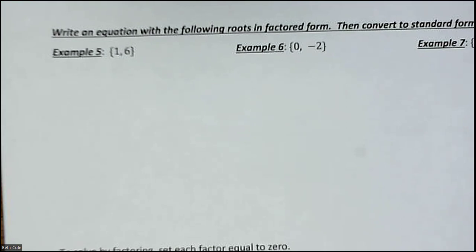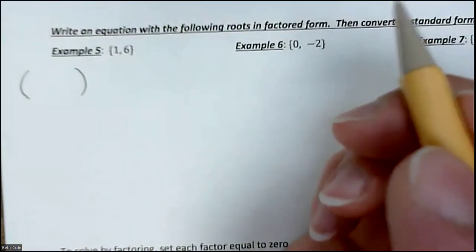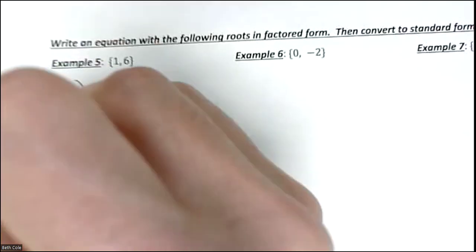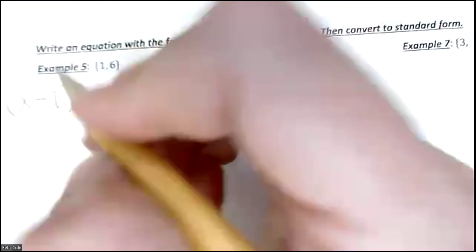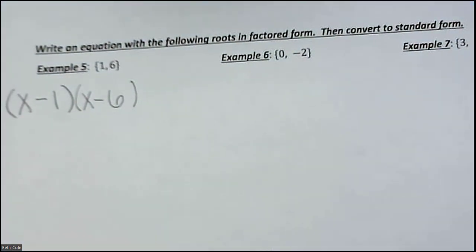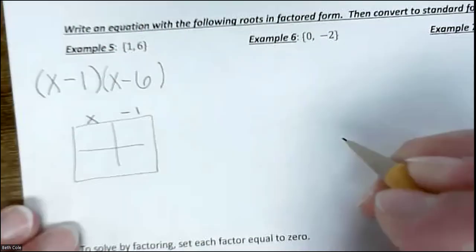For these problems, we're given the answers and we're going to write the equation — kind of the reverse of what we did. You've actually done this before; it's not new information. You just have to set it up yourself. If one of your answers is 1, what is the factor going to be? x minus 1, because 1 minus 1 is 0. And then for 6, that factor is x minus 6. You're going to draw your 2 by 2 box and multiply them together.